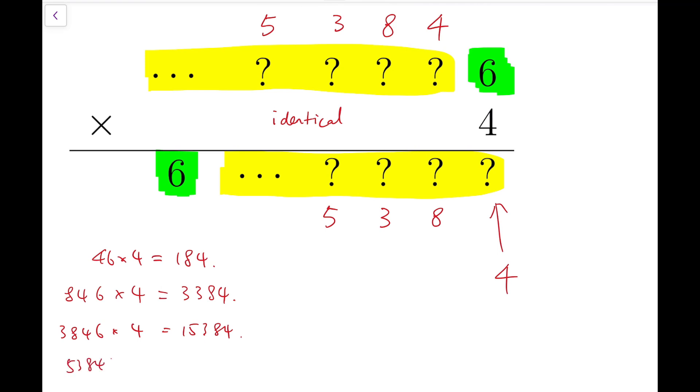Now consider 53846 times 4, which is 215384. And so that fixes the fifth last digit of the yellow block, and that's 1.